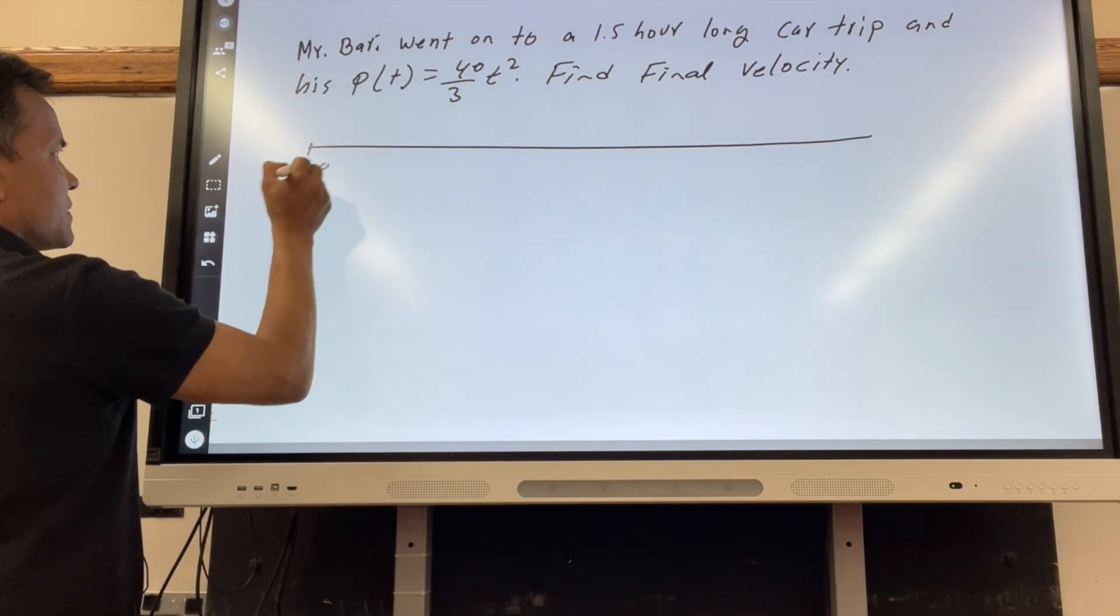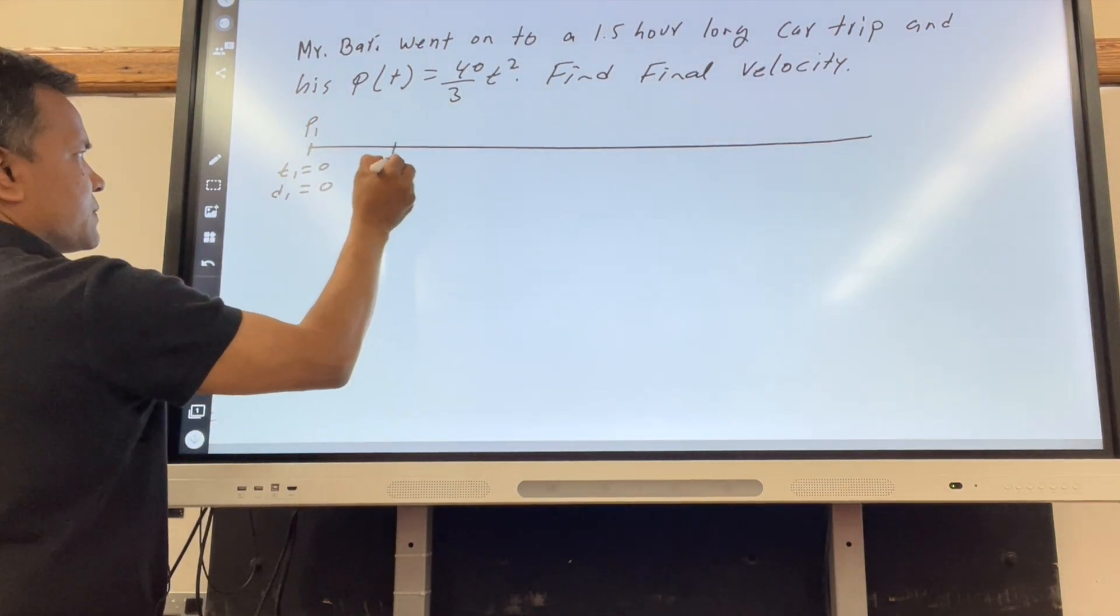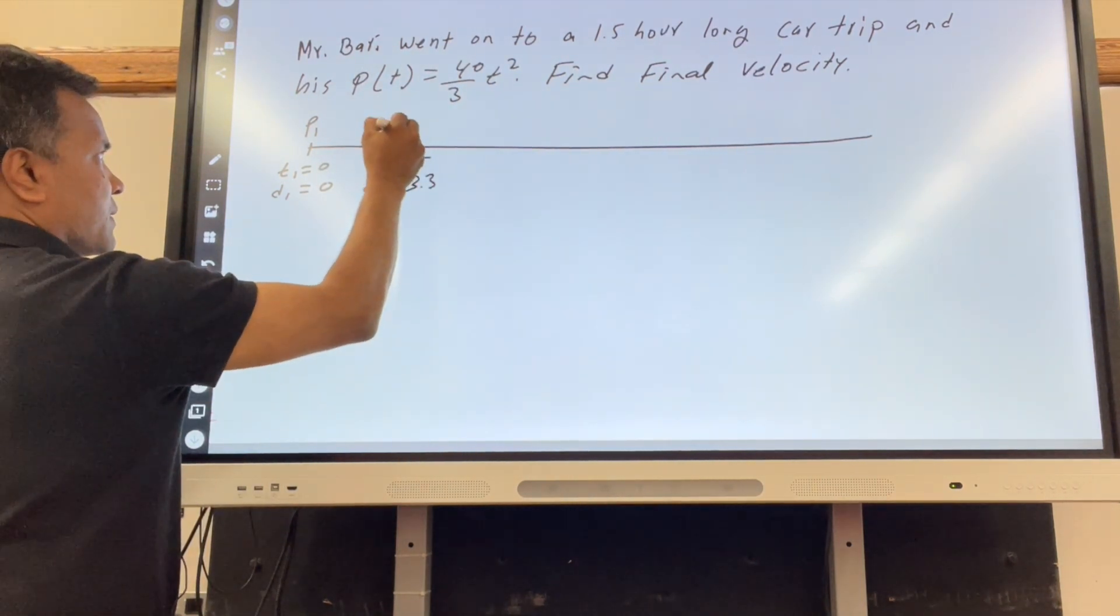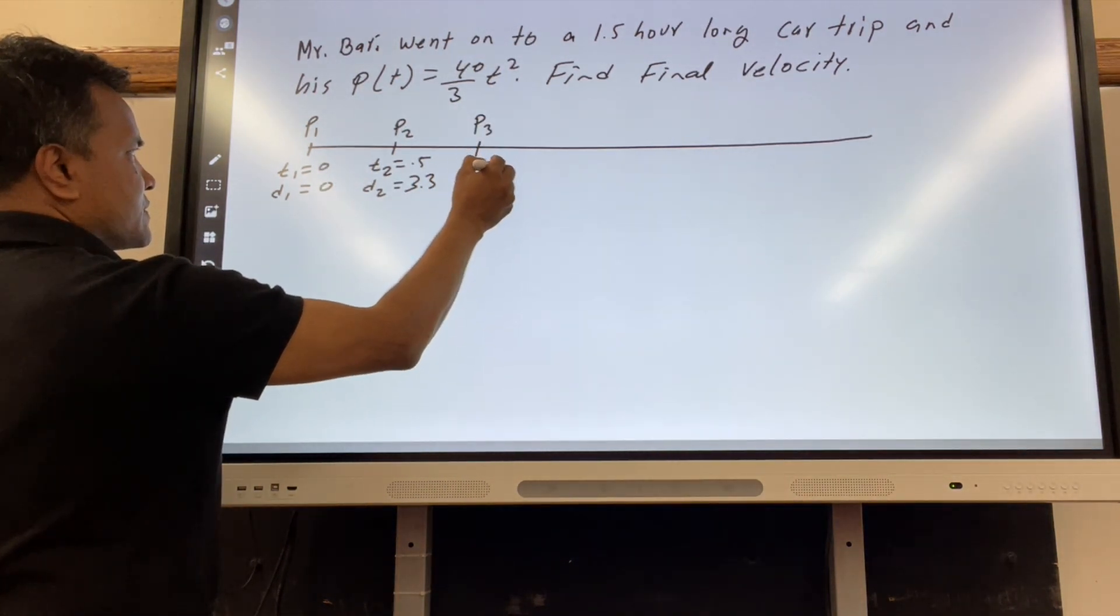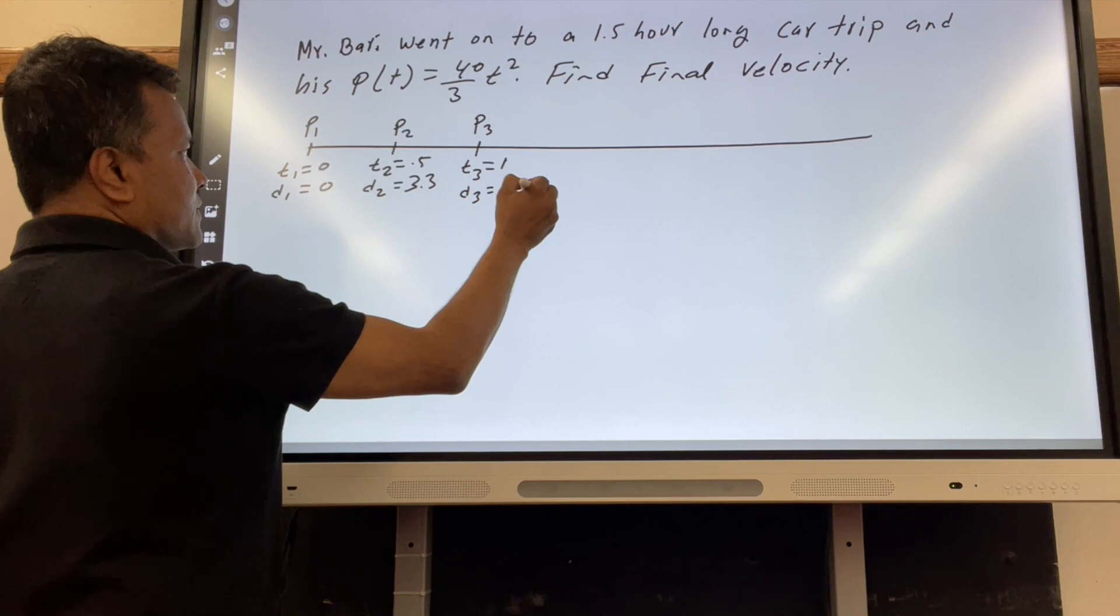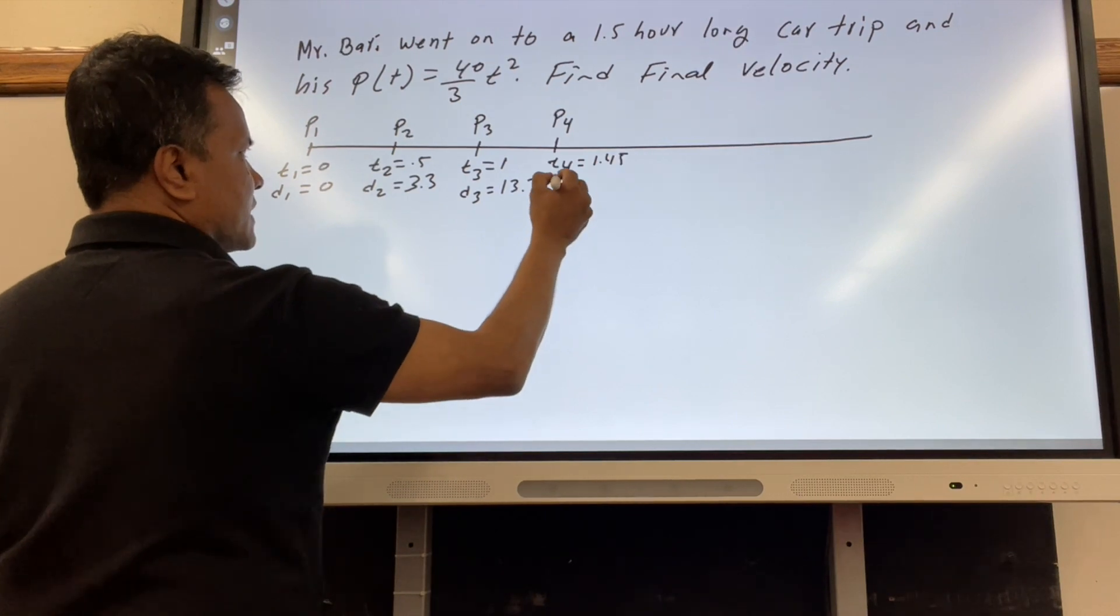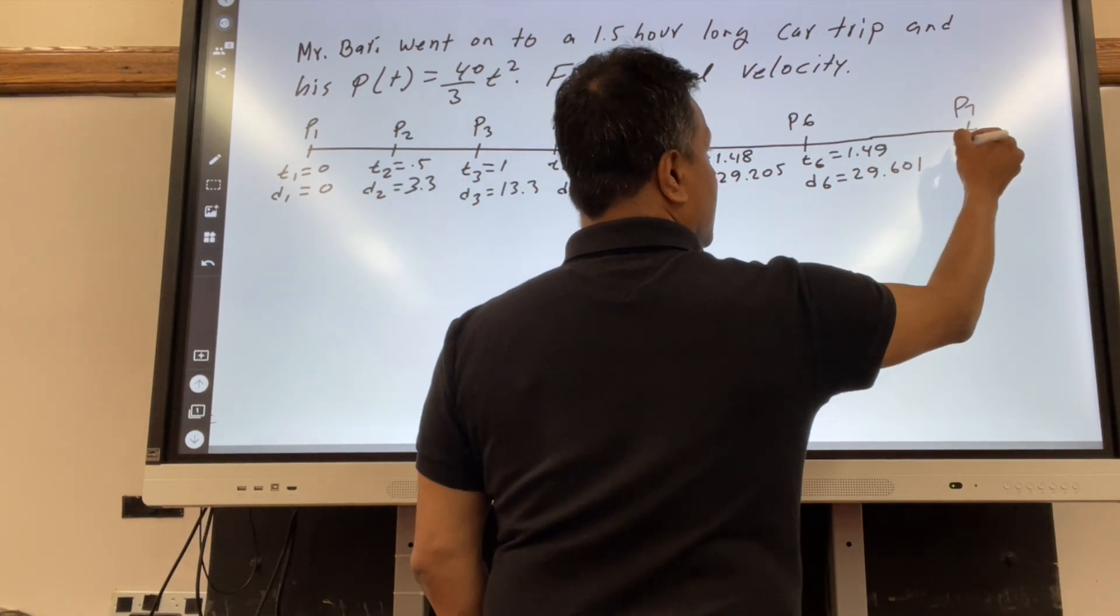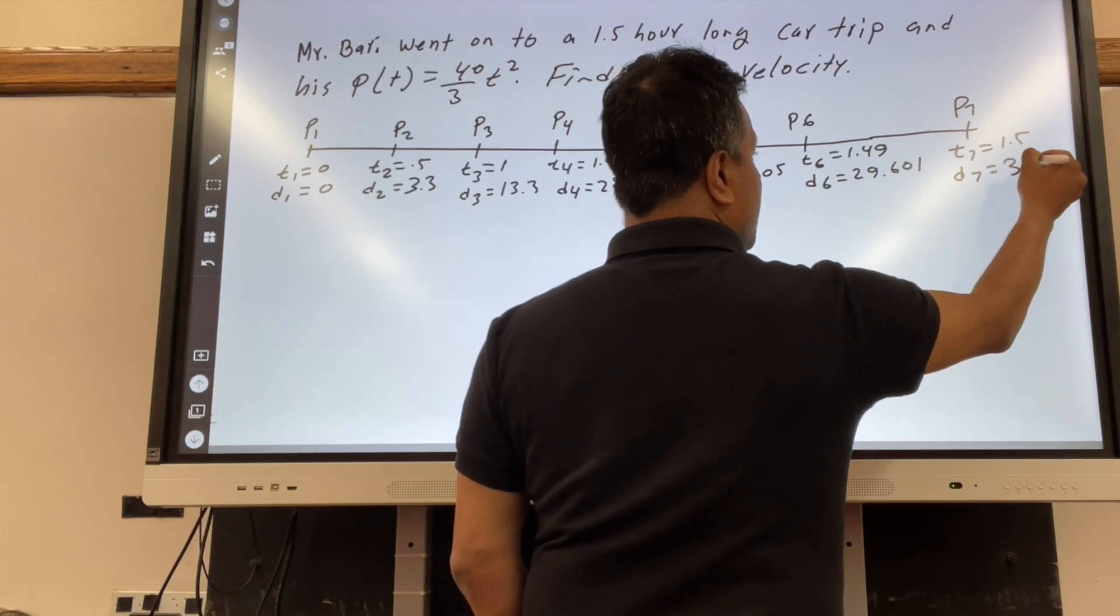Setting up the data table: t1 equals 0 and d1 equals 0. We call it 0.1. t2 is 0.5 and d2 is 0.3. We call 0.2. t3 equals 1 and d3 equals 13.3. t4 equals 1.45 and d4 is 6.01. Finally, t7 is 1.5 and d7 is 30.